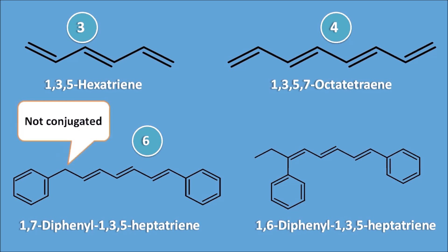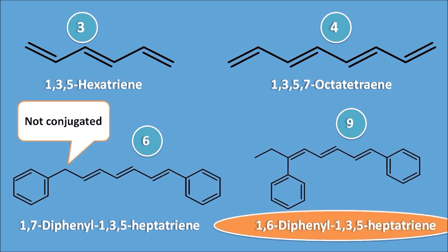You can see the non-conjugated carbon there. The pi bonds not participating in conjugation are not counted, so the total effective conjugated pi bonds in option C are only 6. In the last structure, option D, there are totally 9 conjugated double bonds. As the number of conjugated pi bonds increases, absorption increases and lambda max also increases. So 1,6-diphenyl-1,3,5-heptatriene shows the most absorption among these 4 compounds — this is the right answer.